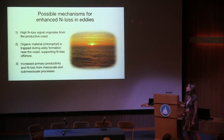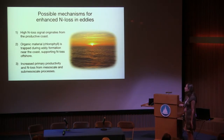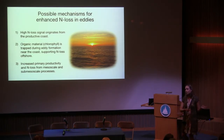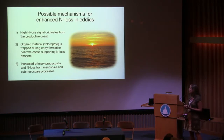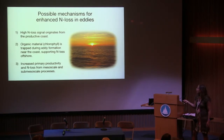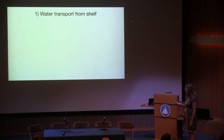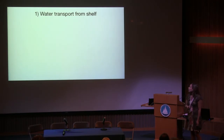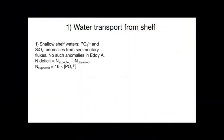Now I'll look at possible mechanisms for enhanced nitrogen loss in eddies. The first hypothesis is that the high nitrogen loss could originate from the productive coast — what you see in the eddy is not produced in the eddy but is just a signal advected from the productive coast. The second is that organic material is trapped during eddy formation near the coast and supports nitrogen loss offshore. The third hypothesis is increased primary productivity — and consequently nitrogen loss — from mesoscale and submesoscale processes.